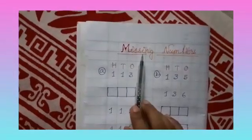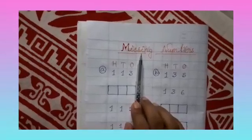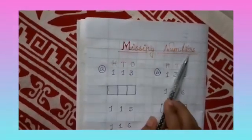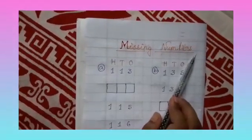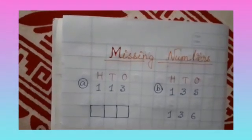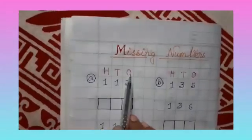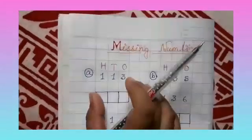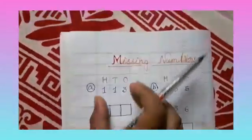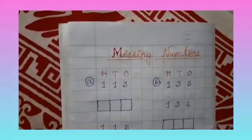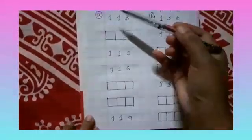On top, as usual, you will be writing the heading: M-I-S-S-I-N-G missing, N-U-M-B-E-R-S numbers. Missing numbers. Then you will write here H-T-O. After that we will continue writing downward.